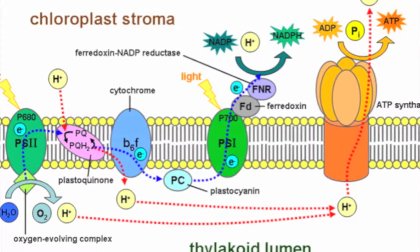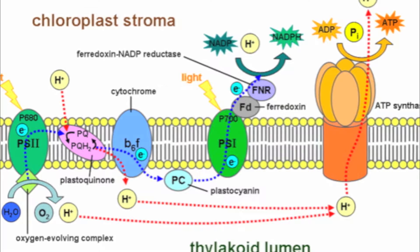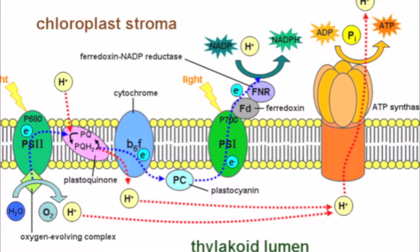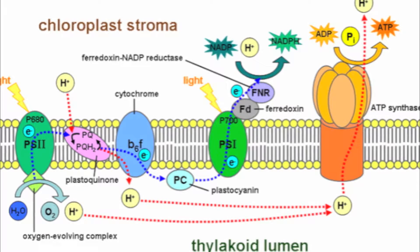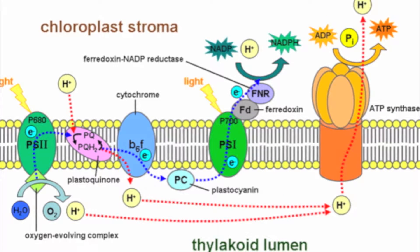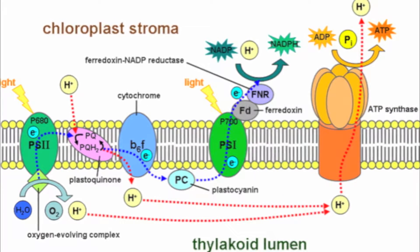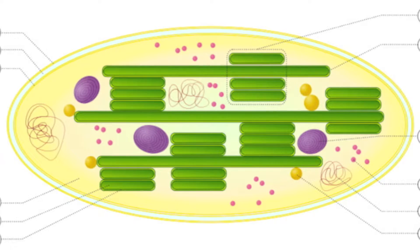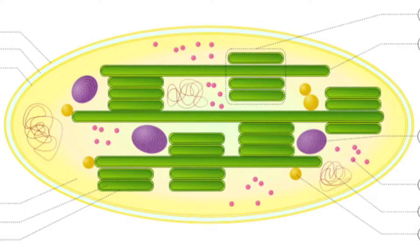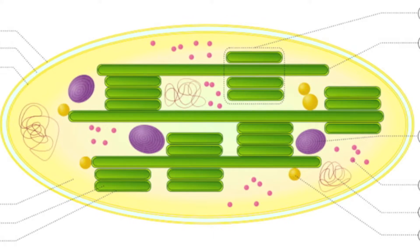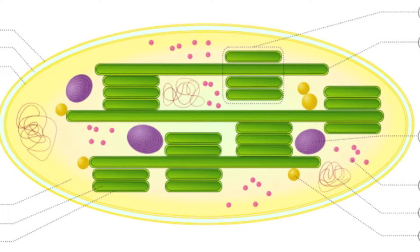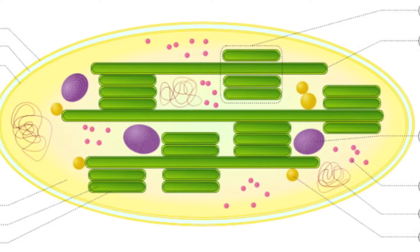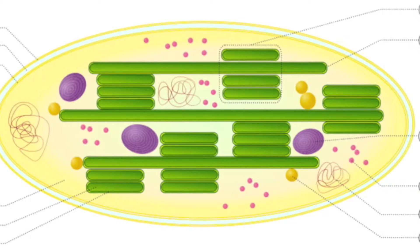The light-dependent reaction occurs in a thylakoid. It includes photosystems one and two, but strangely starts off with PS2. A photon of light absorbed by a pigment in PS2 is transmitted to other pigments until it reaches chlorophyll A, exciting it into a higher energy state. Electrons are captured by a primary acceptor. Water is split by photolysis into O2 and 2 protons.